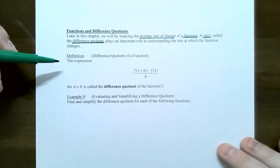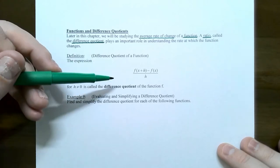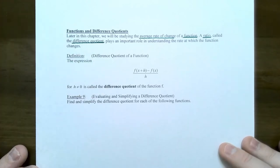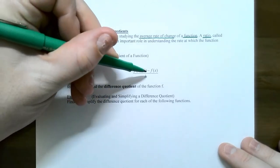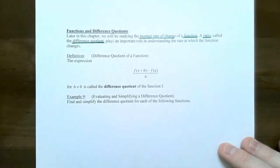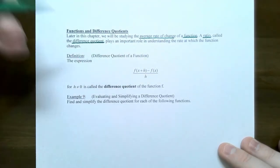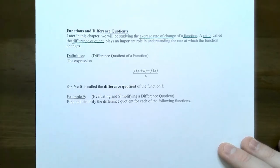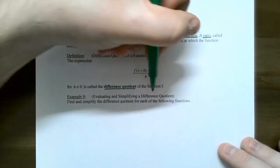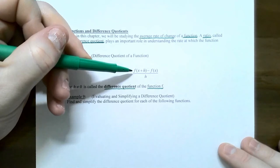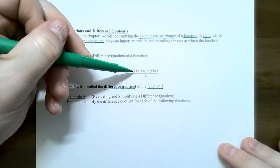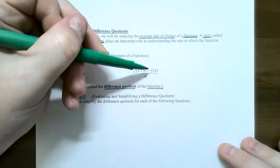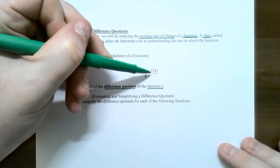This is the definition of a difference quotient of a function. You do not need to memorize this formula — it will be given on any quiz, homework, or exam. The expression is f of x plus h, subtract f of x, and that entire numerator is divided by h. Notice that h cannot be zero because we cannot divide by zero — it would be undefined. This is called the difference quotient of the function f. You're using function notation in the numerator, taking the input to be x plus h in your function f, then subtracting the original function f of x.